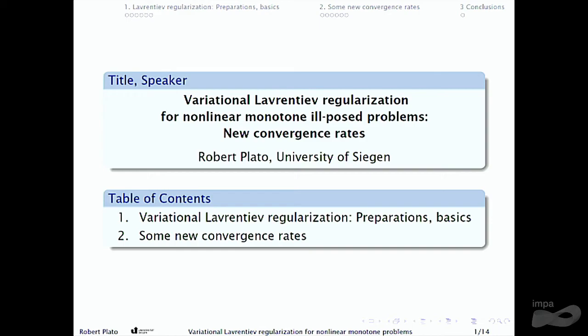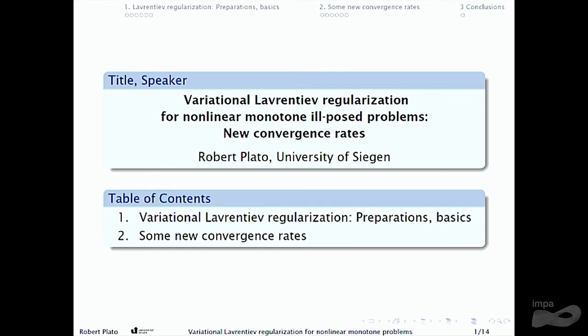I will consider a nonlinear ill-posed problem in Hilbert spaces, and assume that the underlying operator is a monotone operator. What I will speak about is the Lavrentiev regularization method — also called regularization by perturbation — and specifically a variational formulation of this regularization method. Considering convergence rates in that context is perhaps not addressed very often in the literature, to my best knowledge.